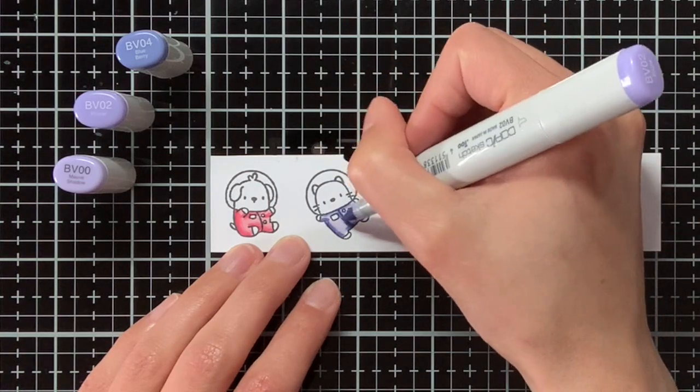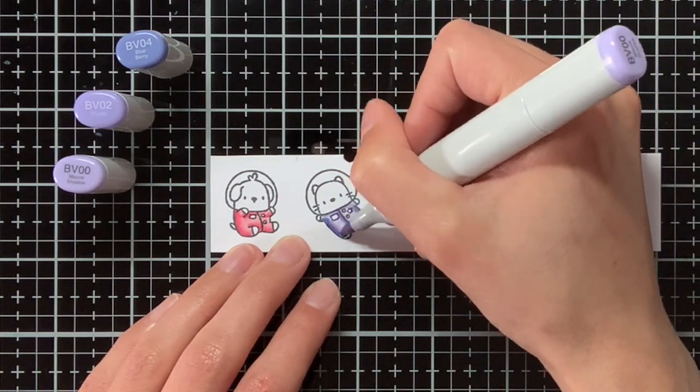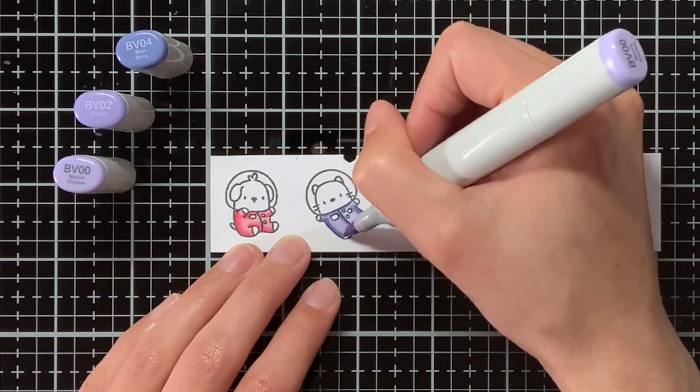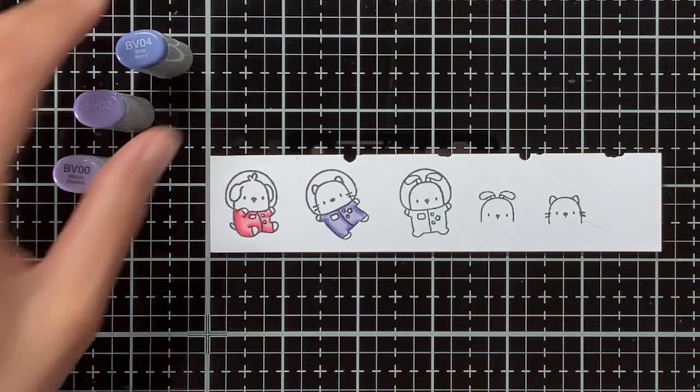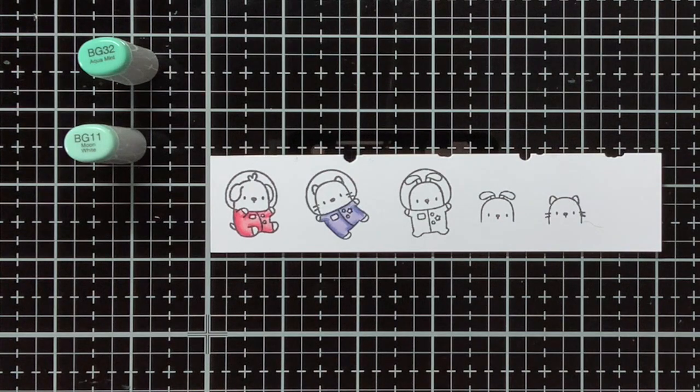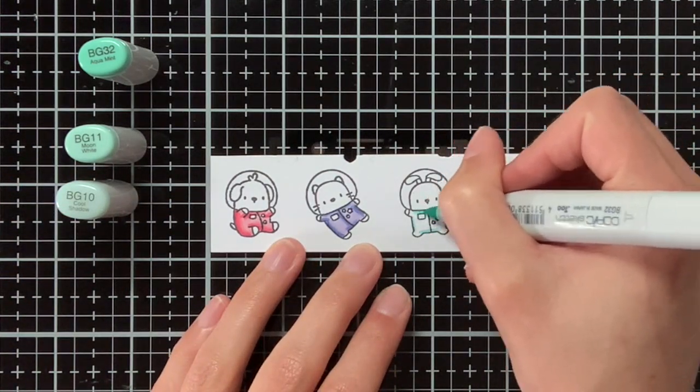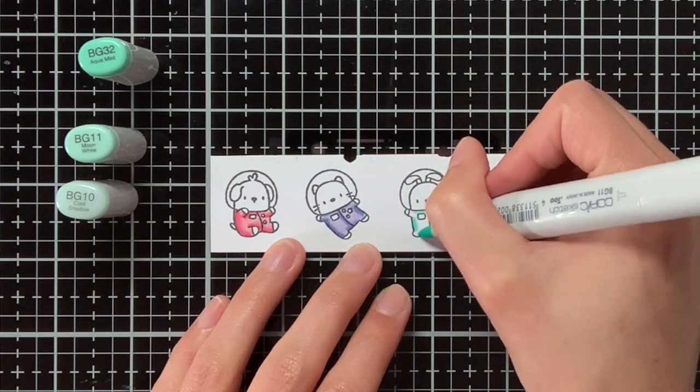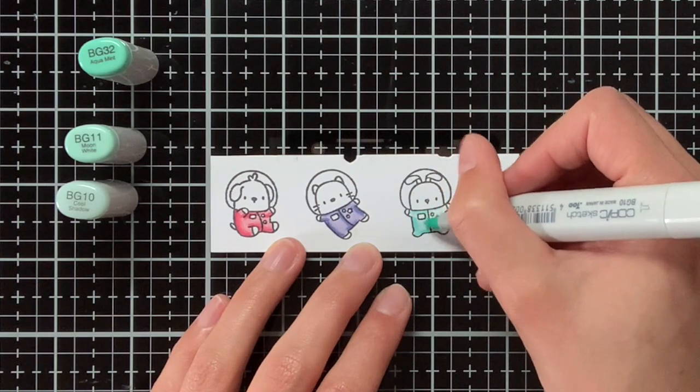These critters are quite small so there's not really a lot of shading going on. I am still working in two layers because I always do that and I find that when you work in two layers with the Copic coloring then you get a nicer blend. For the teals I am using BG32, BG11 and BG10 but I felt there was not enough contrast so later on I will also bring in the BG13.